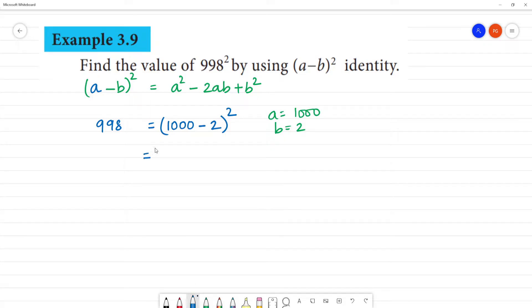So first, 1000 square minus 2 into A value is 1000, then B value is 2, plus B square is 2 square.